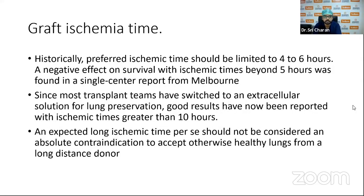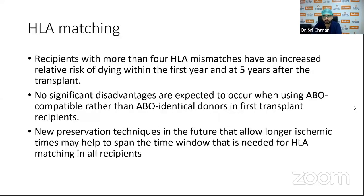Graft ischemia time: historically preferred ischemia time should be limited to four to six hours. A negative effect on survival with ischemia time beyond five hours was found in a single center from Melbourne. However, most transplant teams have switched to an extracellular solution for lung preservation and good results have been reported with ischemic times greater than even 10 hours. An expected long ischemia time is not an absolute contraindication to accept an otherwise healthy lung from a long-distance donor. Regarding HLA matching, recipients with more than four HLA mismatches have increased relative risk of dying within the first year.